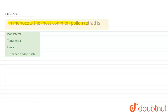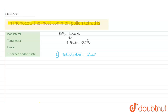The question is: in monocots, the most common pollen tetrad is? Basically, in a pollen tetrad, four pollen grains unite together and form a pollen tetrad. They are categorized differently on the basis of arrangement. The first one is tetrahedral, the second one is linear, and then tetragonal.